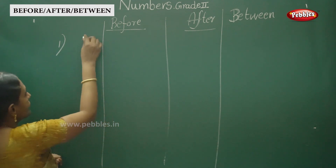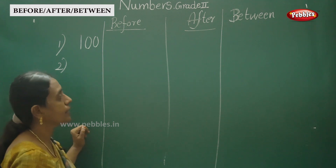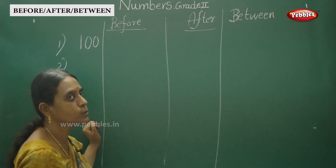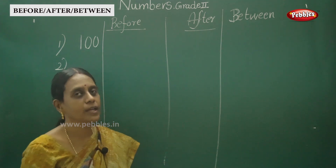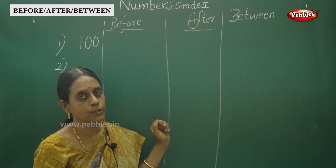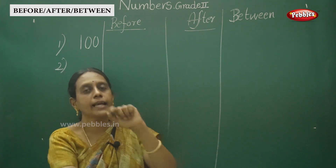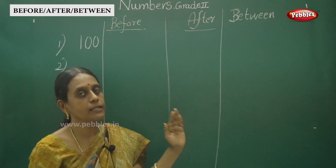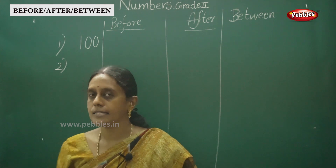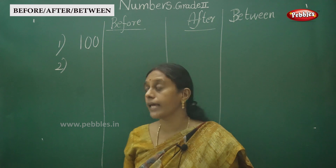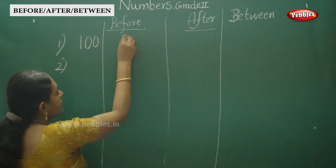Okay children, let's think. That is 123 — you have to count from 91. Now we are going to read before and after number. From 91: 92, 93, 94, 95, 96, 97, 98, 99, 100. So what comes before 100? The answer is 99.